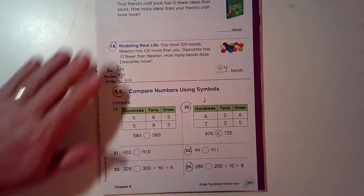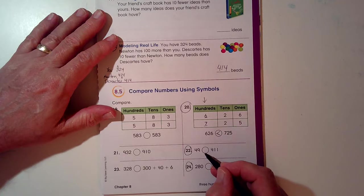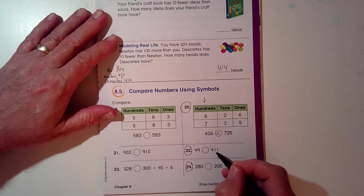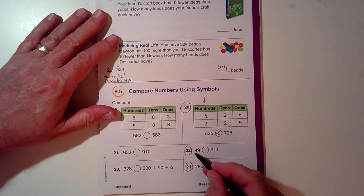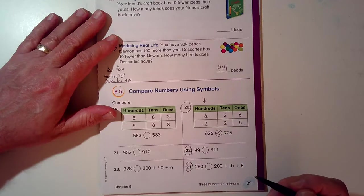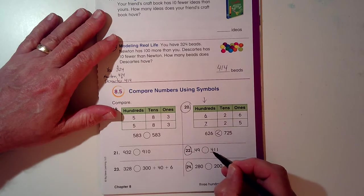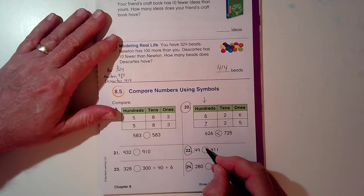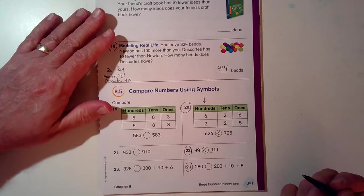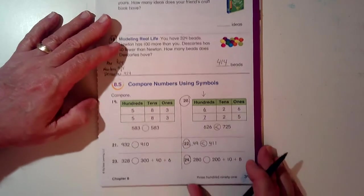22, 49 is something than 411. Well, I don't have any in the hundreds place, and this has 4 in the hundreds place. That's an easy one.